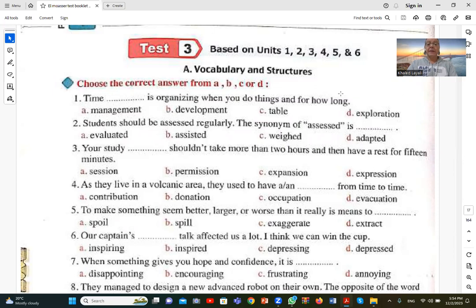This test is on the units from one to six. Let's do the first question, number one. Time is organizing when you do things and for how long? Time management, A. تنظيم الوقت أو إدارة الوقت هي أن أنت تنظم إمتى والأشياء التي تعملها وكم الفترة. Time management A is the correct answer.